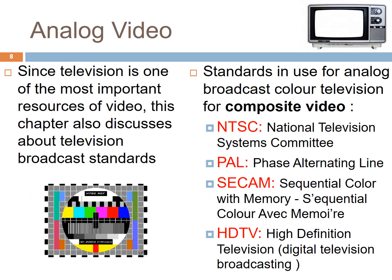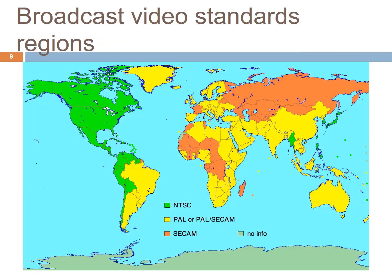Analog video for TV broadcasting is the most important resource of video. Some of the standards for TV broadcasting that use composite video are NTSC, PAL, SECM, and HDTV. The difference between these standards are the scan lines and scan rate. Different country regions in this world use different types of standards. The largest areas, shown in yellow, use PAL or SECM standard.